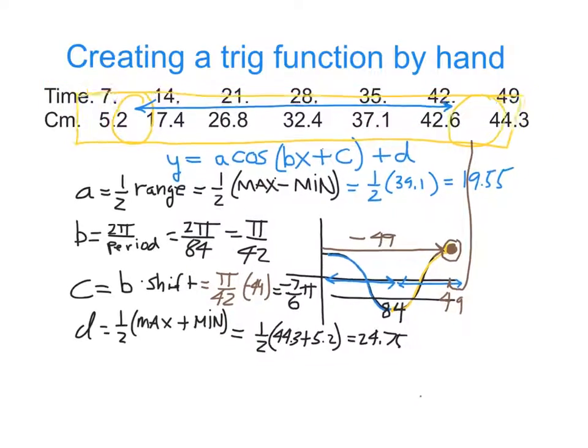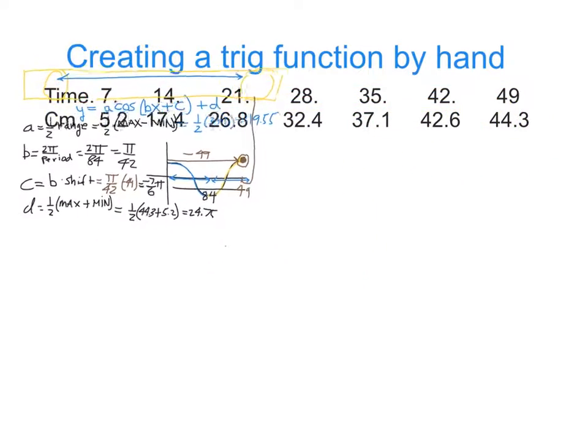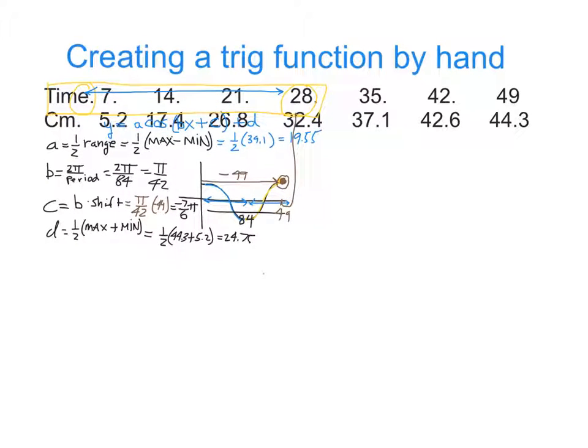Putting it all together, we can build the curve based on those A, B, C's, and D's. So the final answer would be y equals 19.55 for the amplitude times the cosine of π over 42x minus 7 sixths π plus 24 and 3 quarters.